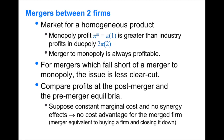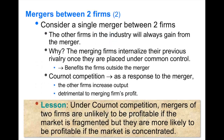The difference is that when we analyzed cartel formation, we assumed the cartel was formed by firms willing to join. Here, things are different: if merger negotiations fail, firms remain separate. It's either all negotiating firms forming the merged entity, or all of them staying separate.